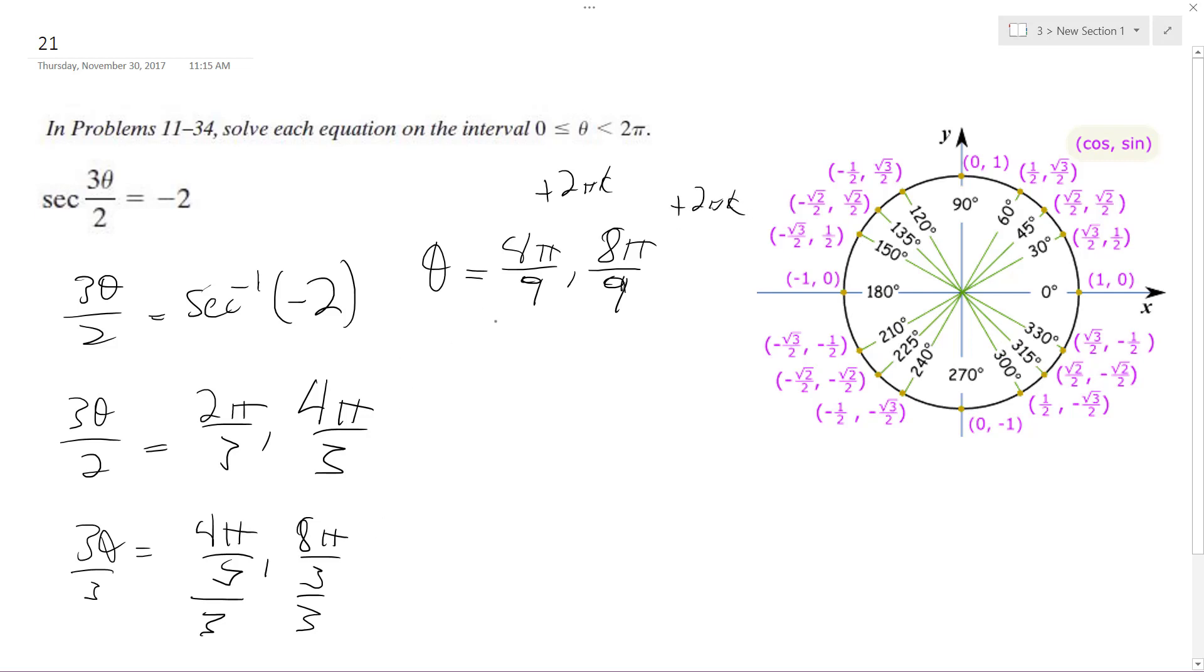And then when I solve these, my k becomes 2 pi k times 2, then divided by 3, so 4 pi k divided by 3.